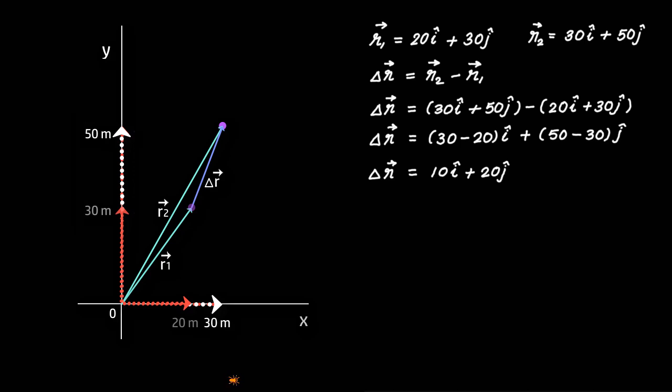So you see, once you write the position vector in i, j, k notation, delta r can be found doing some basic algebra.